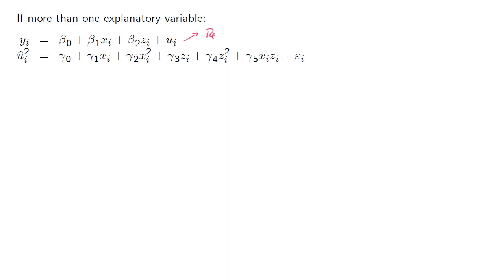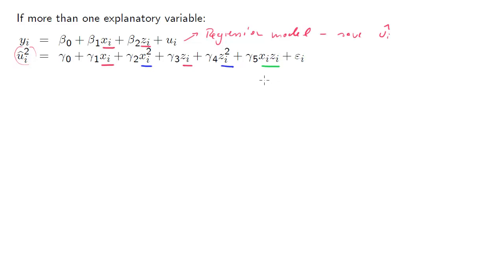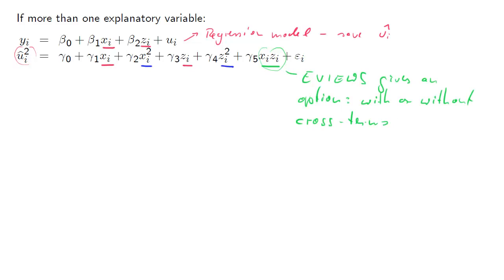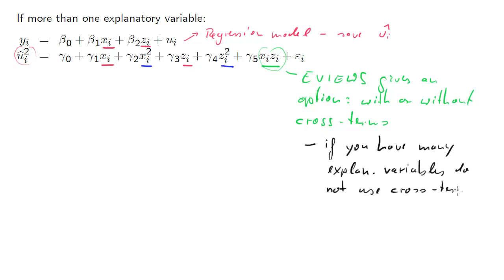For the White test, if we have more than one explanatory variable — for instance xi and zi — we would estimate the regression, save the ui residuals as before, then calculate the auxiliary regression using Ui hat squared as the dependent variable. We include all the xi's and zi's and the xi squareds and zi squareds. Now, if you have more than one variable, you also have to consider cross terms — it's a second-moment type of variable. You have the option whether you want to include the cross terms.